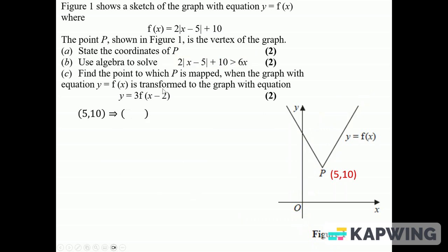Then the last part, point P, find the point to which P is mapped when f(x) is transformed to 3f(x - 2). Well, when you do f(x - 2), it moves the graph to the right by 2, so the new x coordinate is going to be 7. And then when you stick the 3 in front, you do 3 lots of f(x), you're multiplying the y values by 3.